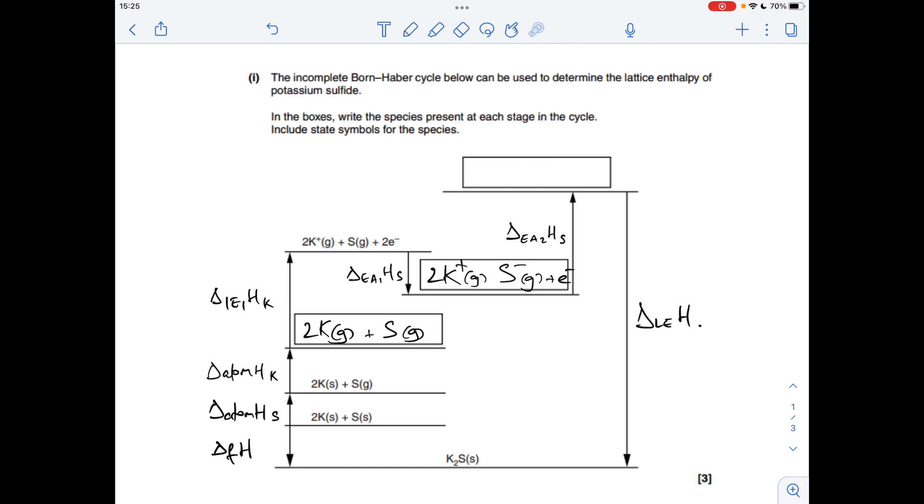And then the next thing I'm going to do is the second electron affinity of sulphur. So that electron is going to go onto there. So you've got your 2K+ gas, but you've also got S2- gas.